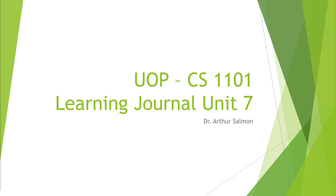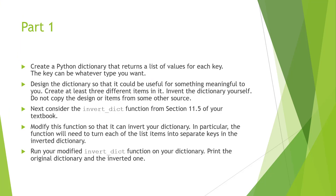Hello and welcome to my UOP CS1101 learning journal for Unit 7, for my Python programming course. In this learning journal we're going to be taking a dictionary function — if you look at section 11.5 in the textbook you should be able to pull the invert dictionary function out.